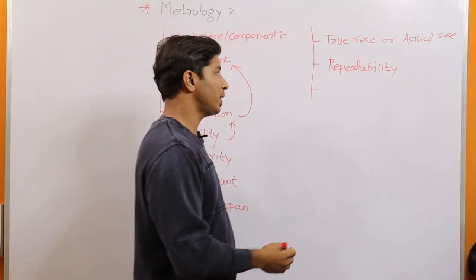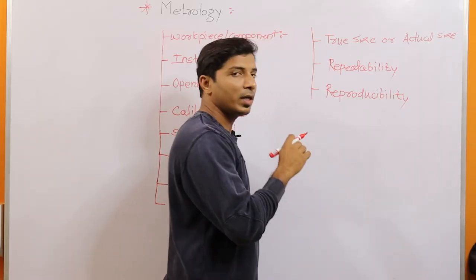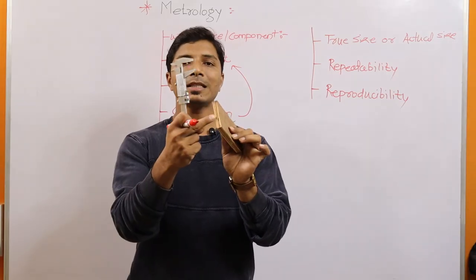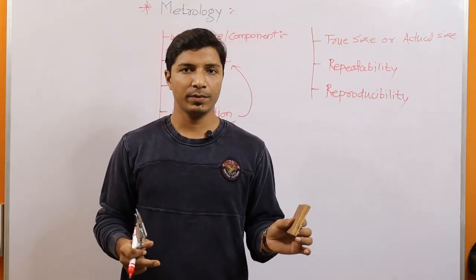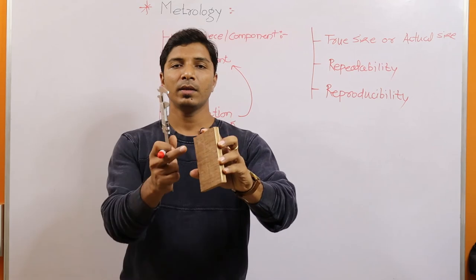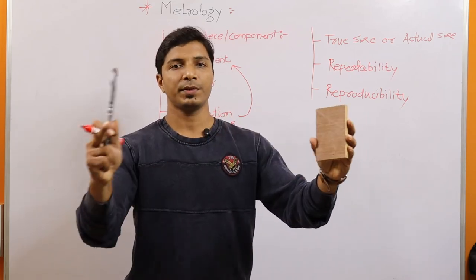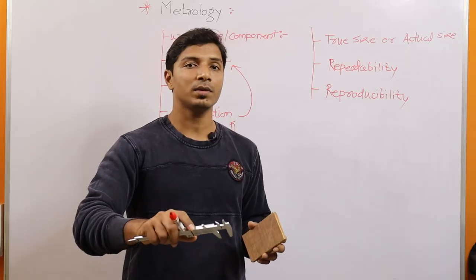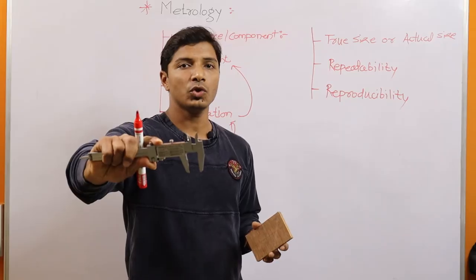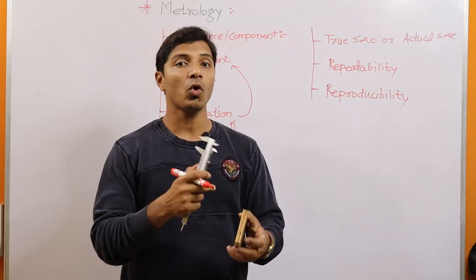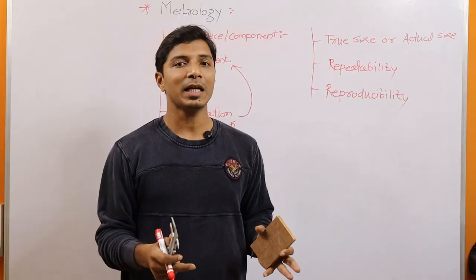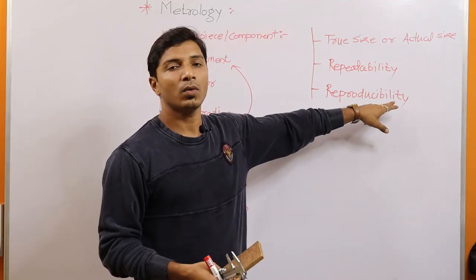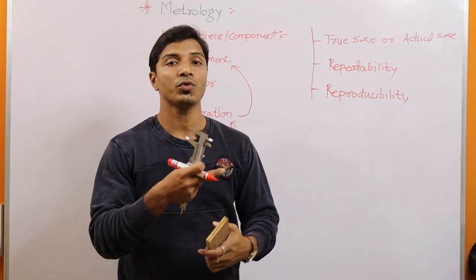Now, reproducibility: to understand this, assign the same dimension to be measured 20 times by three different operators, using a single instrument or different instruments. If the readings coming from all operators are close together, then those results are called reproducible or have reproducibility.